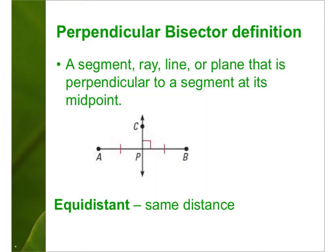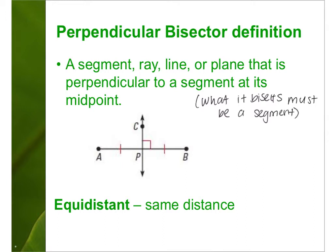A bisector means it cuts a line segment in half. What bisects must be a segment — it could be a segment, a ray, a line, or a plane, but it must bisect a segment. From the image, AB is bisected by CP because AP equals PB — it splits into two equal parts, crossing at its midpoint. It's also the perpendicular bisector because it creates that 90-degree angle.